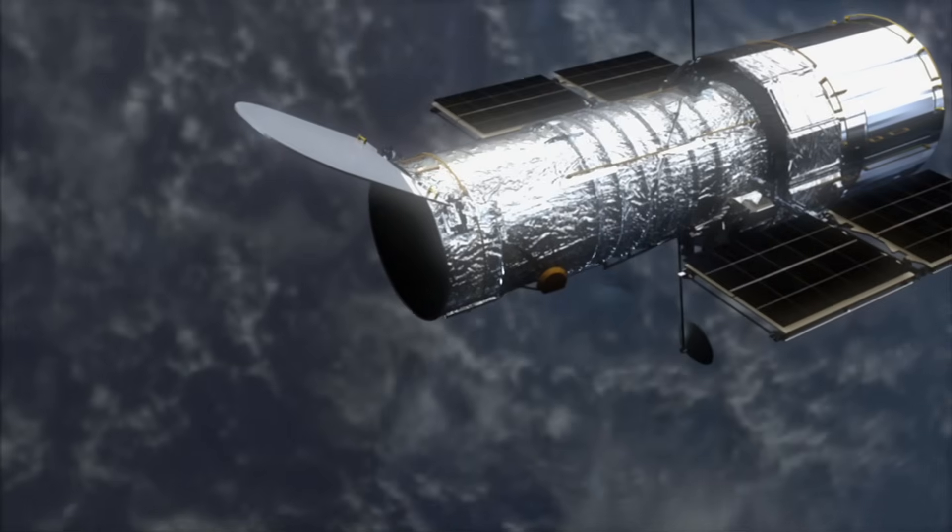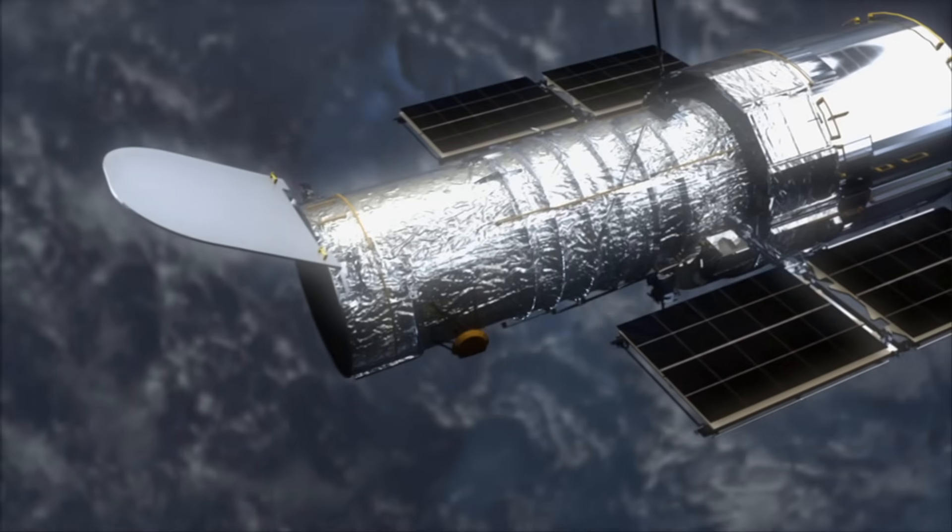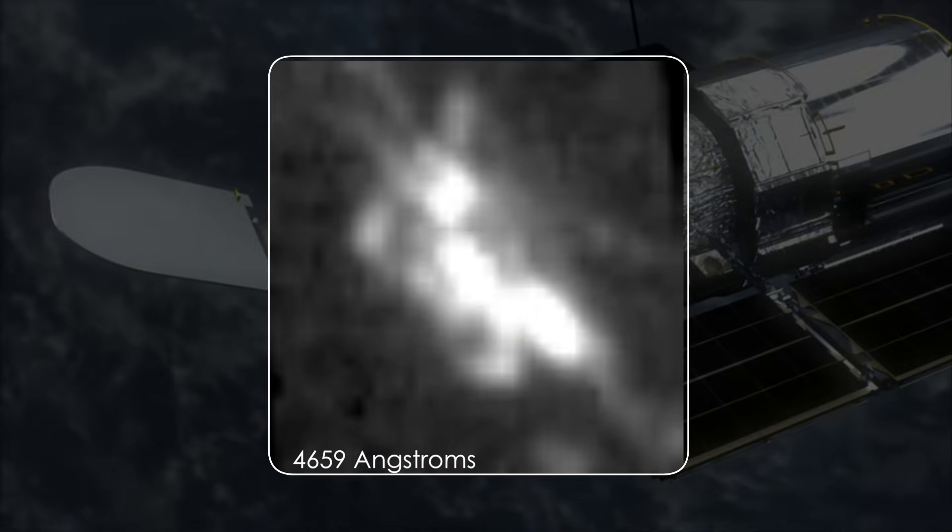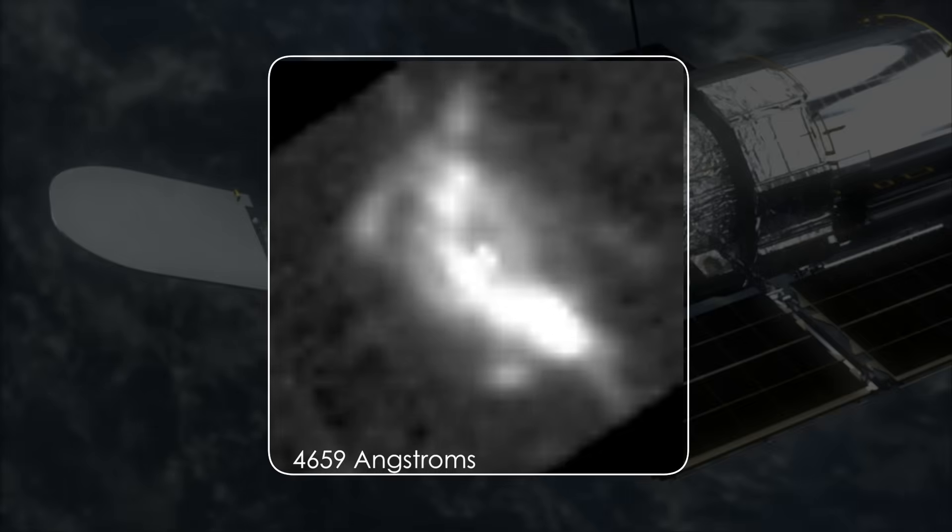Astronomers also keep an eye on Eta Carina with the Hubble Space Telescope. These images show a structure resembling a crab, formed by gas excited by the secondary star's intense UV light.